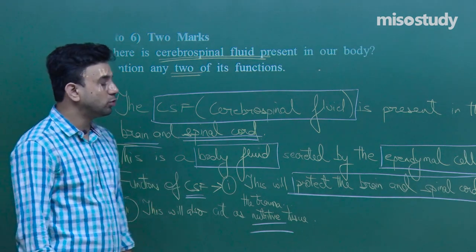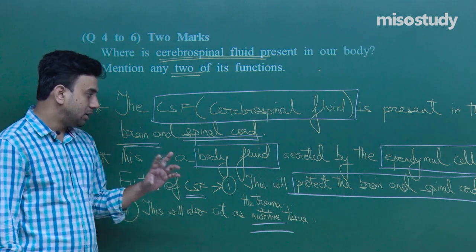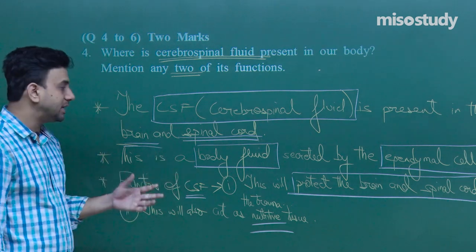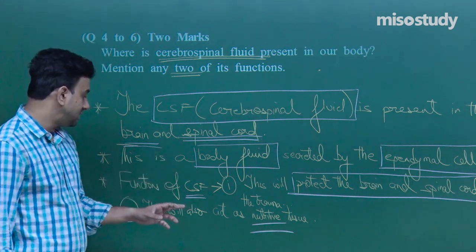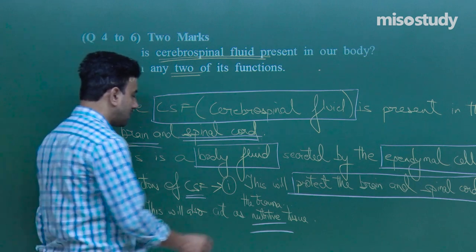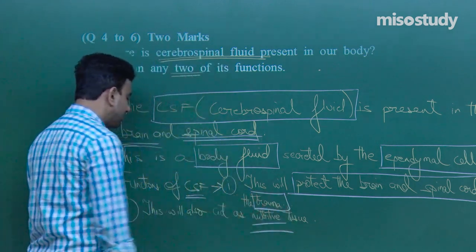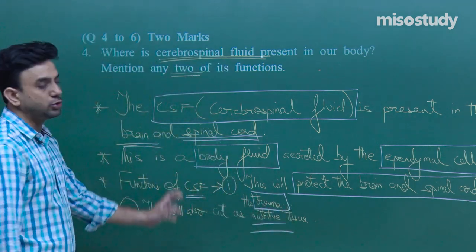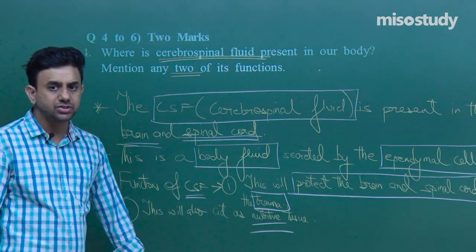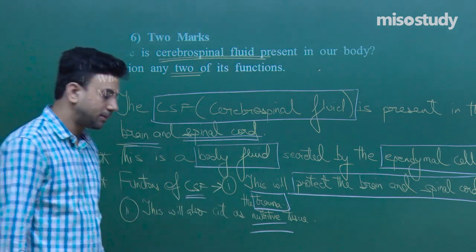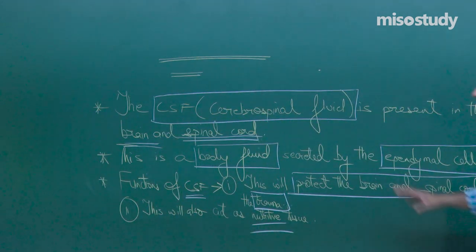So to summarize: the cerebrospinal fluid is present in the brain and spinal cord, secreted by the ependymal cells. It protects the brain and spinal cord against trauma, and also acts as nutritive tissue. Please note this down and we will continue after a short break.